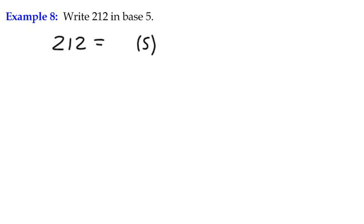We're going to divide it by 5 and work out the quotient and remainder. In this case, 5 divides into 212... 40 times that's 200. In fact, it doesn't. It divides 42 times. That gives us a remainder of 2.